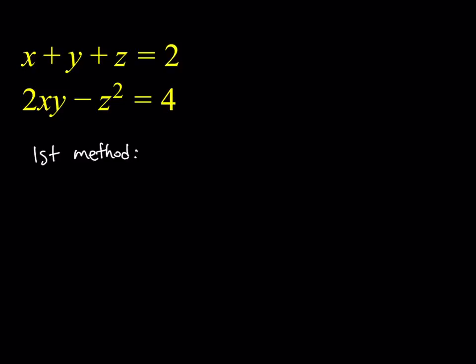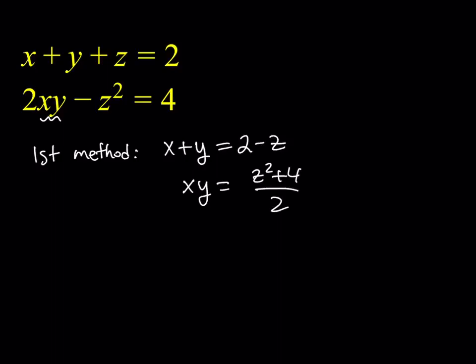I'm going to go ahead and substitute. What I'm going to do is isolate x plus y from the first equation, so x plus y is equal to 2 minus z. And then from the second equation, I'd like to isolate xy — I'll tell you why in a little bit. If I do that, I'll be getting z squared plus 4, all over 2. You can just add z squared and divide by 2.